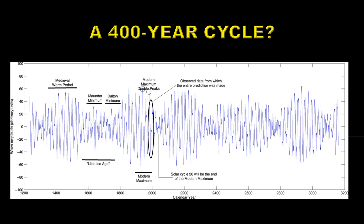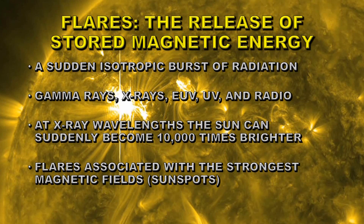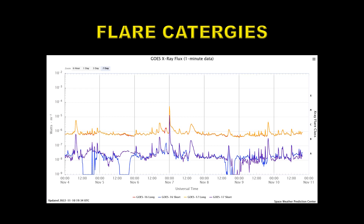Let's take a look at another activity indicator — flares. They are a sudden release of magnetic energy, producing a sudden isotropic burst of radiation that goes in all directions. That radiation can be gamma rays, X-rays, extreme ultraviolet, ultraviolet, and radio waves. At X-ray wavelengths, the sun can suddenly become 10,000 times brighter because of a single flare. Flares are generally associated with the strongest magnetic fields — i.e., sunspots. The bigger and more dynamic the sunspots are, the bigger and more likely we are to get large flares.